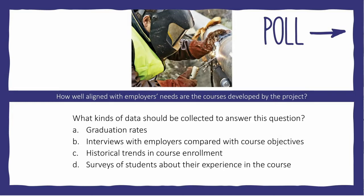A second poll then asked: what kinds of data would we need to answer this question? Options included graduation rates, interviews with employers compared with course objectives, historical enrollment trends, or surveys of students. 97% of participants chose B — interviews with employers compared with course objectives — which makes a lot of sense, because the employer's perspective is the essential data needed to assess the relevance of course content. In a nutshell, evaluation questions point to what the evaluation will focus on and the type of information that will be gathered.